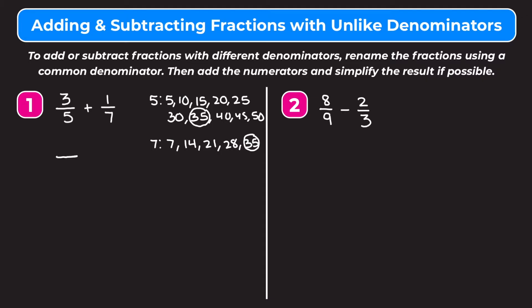We're going to put 35 on the bottom of both fractions and now we have to figure out what our numerator needs to be to keep these fractions equivalent. For 3 fifths, to get from 5 to 35 we multiply by 7, so we also multiply the numerator by 7. 3 times 7 gives us 21, so 3 fifths turns into 21 thirty-fifths. For 1 seventh, to get from 7 to 35 we multiply by 5, so we multiply the numerator by 5 also, giving us 5 thirty-fifths.